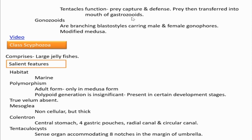The third zooid present in the cormidium is the gonozooid. Gonozooids are actually branching blastostyles — we learned about blastostyles in Obelia. They carry male and female gonozooids, and these gonozooids are also modified medusae. This completes the first class Hydrozoa, where we have learned two examples: Obelia and Physalia.